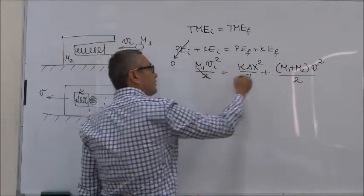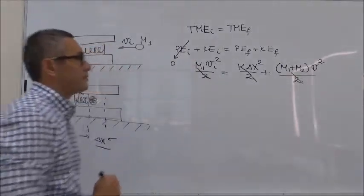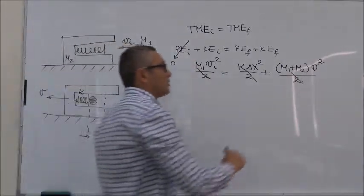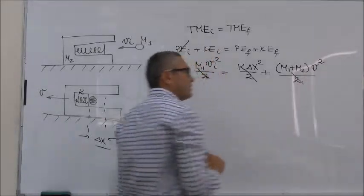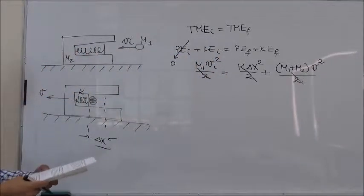We can cancel 2 on both sides of the equation and then we can solve for delta X. But we will still need to know what is the final velocity V. It is actually not given in the problem.